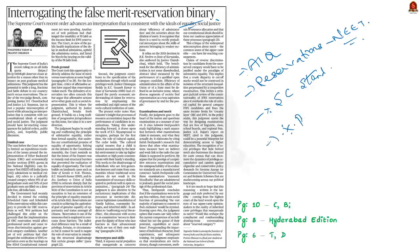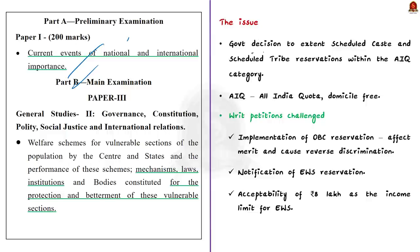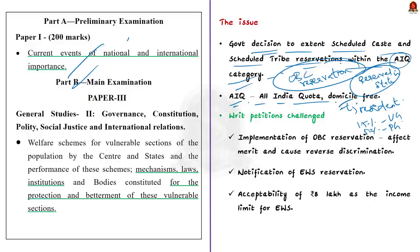First, let us understand what the AIQ is. In medical counseling, AIQ stands for All India Quota. Generally, a number of seats are reserved in state medical colleges for students domiciled in their respective states. The remaining seats — 15% in UG courses and 50% in PG — are reserved by the states to the All India Quota, where seats are filled on a domicile-free, all-India basis. Within this category, reservations are given for SC and ST. Now the government has decided to extend reservation for OBC as well.